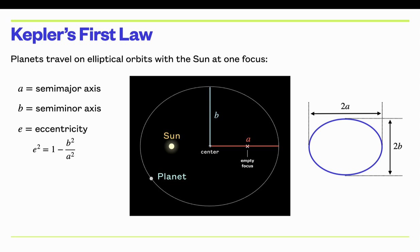And then the eccentricity, e, is a measure of how squashed the ellipse is. So it's defined as e squared, that is the eccentricity squared, is 1 minus b squared over a squared.